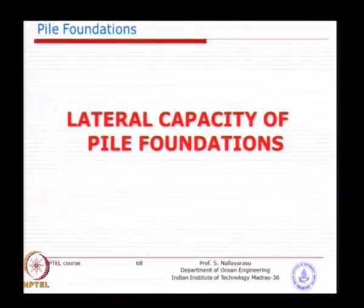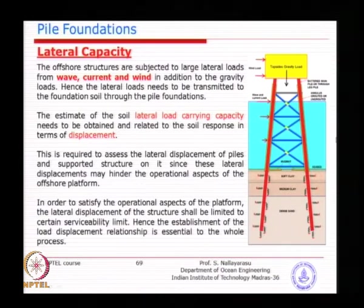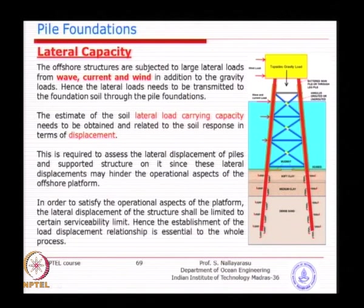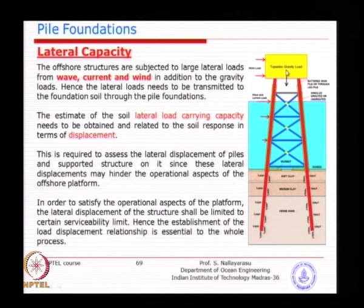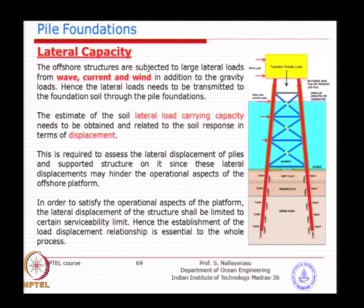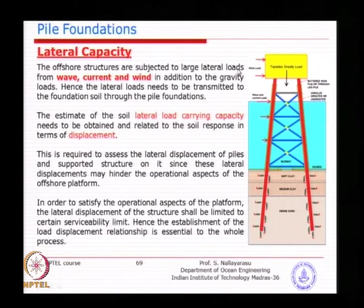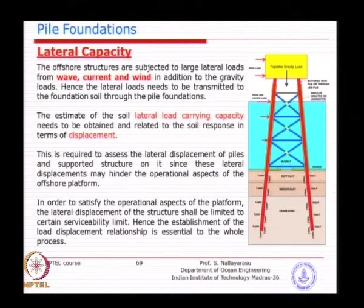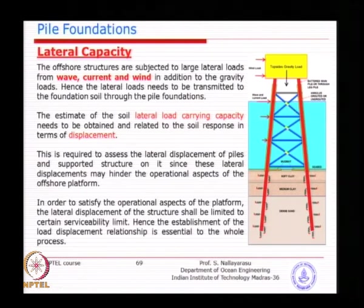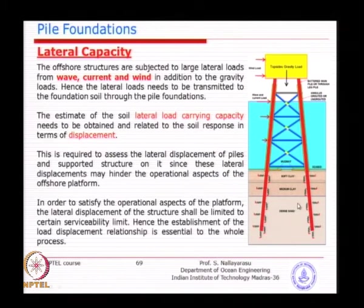Looking at some basics: when an offshore structure is supporting a superstructure with predominantly gravitational loads, you might have a little bit of wind load — very similar to onshore structures — but the magnitude is not going to be too high. The substructure is subjected to a reasonable amount of wave and current loads, which cause horizontal displacement of the structure. That is the reason why we try to embed the foundation into the ground.